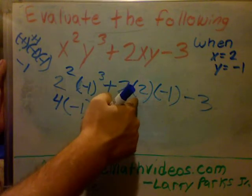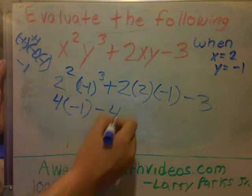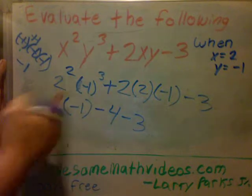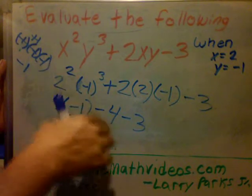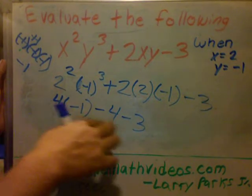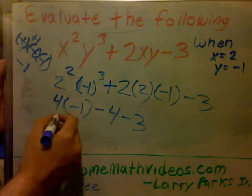2 times 2 times negative 1 is negative 4. And then we have a minus 3. Now let's keep doing order of operations. Now you might be tempted to do this first, but remember you want to do multiplication before you subtract. So 4 times negative 1 is negative 4.